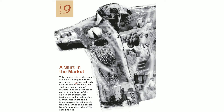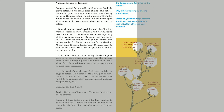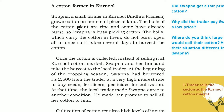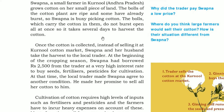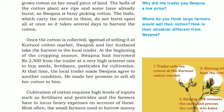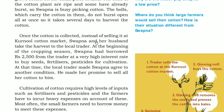In the chain, who are benefited and who are not, we shall find out. Swapna is a farmer in Kurnool, Andhra Pradesh. She grows cotton on her small piece of land. The balls of the cotton plant are ripe and some of them are already burst, so Swapna is picking them. The balls which carry the cotton in them do not burst open all at once. It would take several days to harvest the cotton.